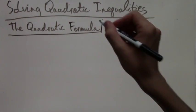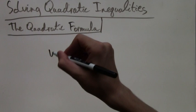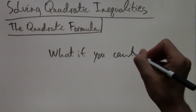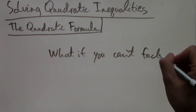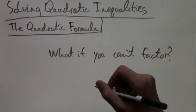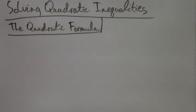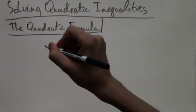The simplest way to solve quadratic inequalities is by factoring, but the problem arises when you can't factor certain quadratic equations or inequalities. For those cases, we can use the quadratic formula.